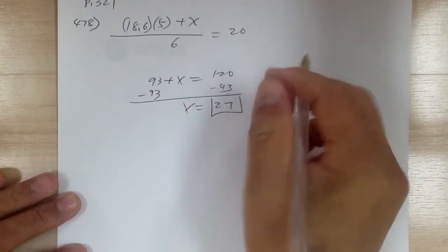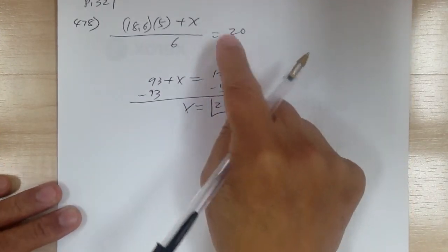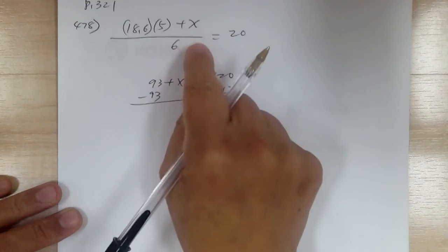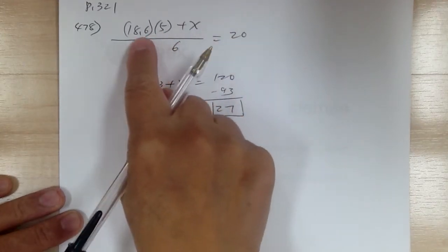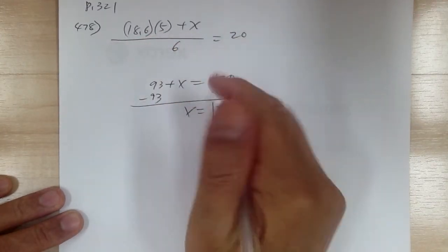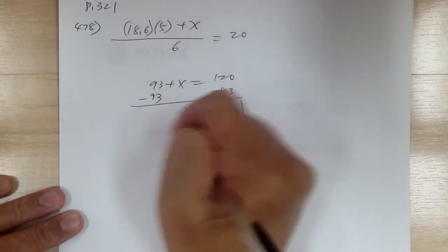So you have to score 27 points in the next game in order to raise the average from 18.6 to an average of 20.